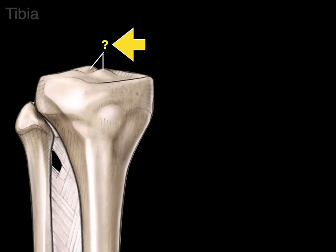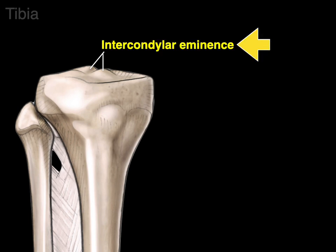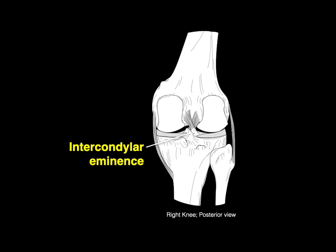Between the two condyles is a prominence or eminence that protrudes upward, called the intercondylar eminence. The intercondylar eminence serves as an attachment for the anterior and posterior cruciate ligaments.